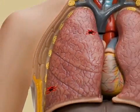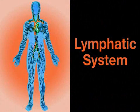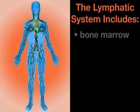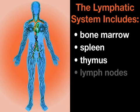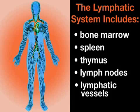The lymphatic system is one of the body's first defenses against disease. It includes the bone marrow, spleen, thymus, lymph nodes, and lymphatic vessels, which are tubes that carry infection-fighting white blood cells. Some severe cancers, like lymphoma, actually form in the lymphatic system and therefore do not manifest as tumors.